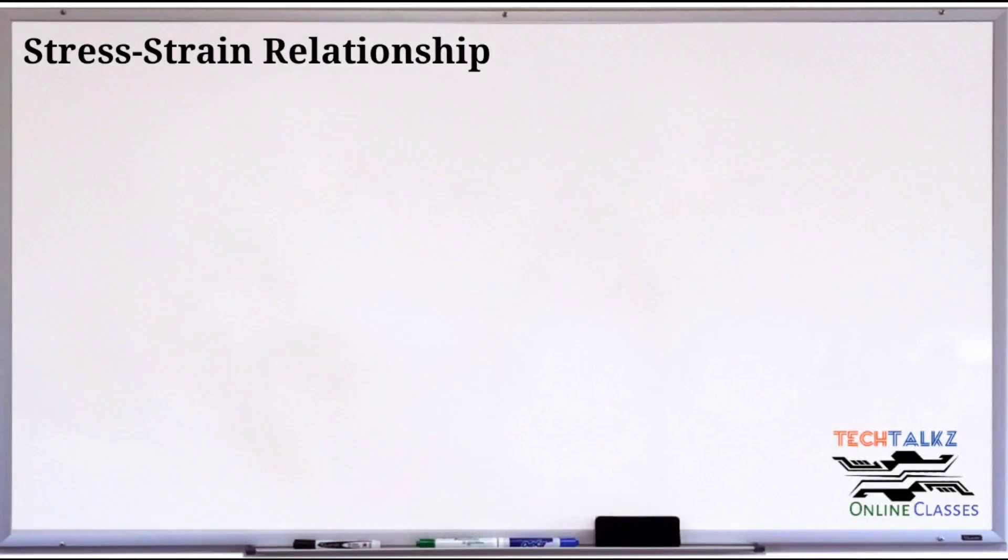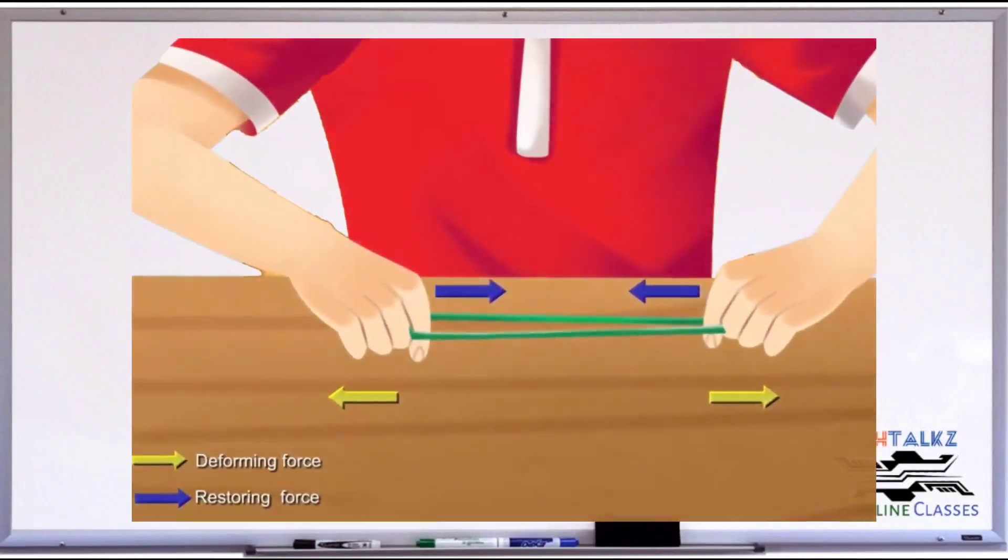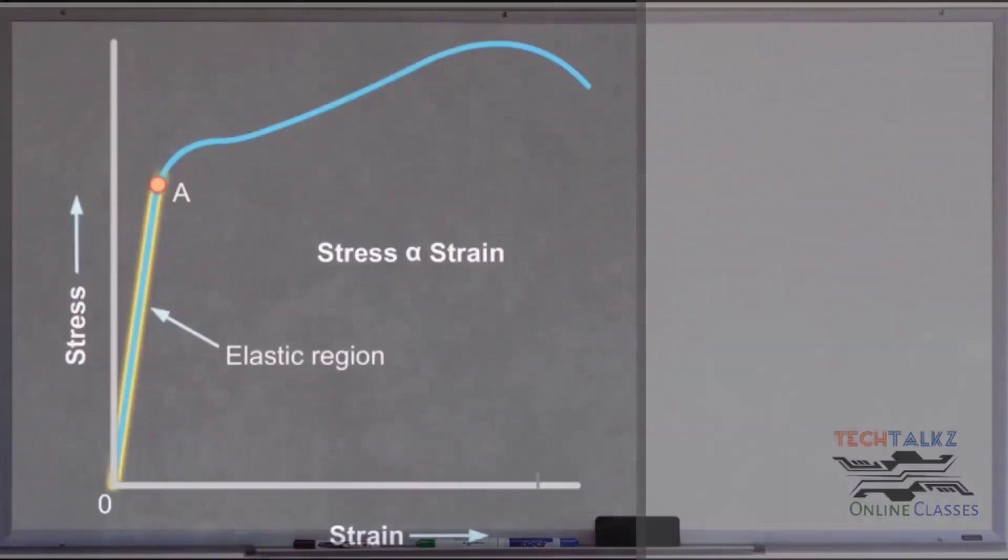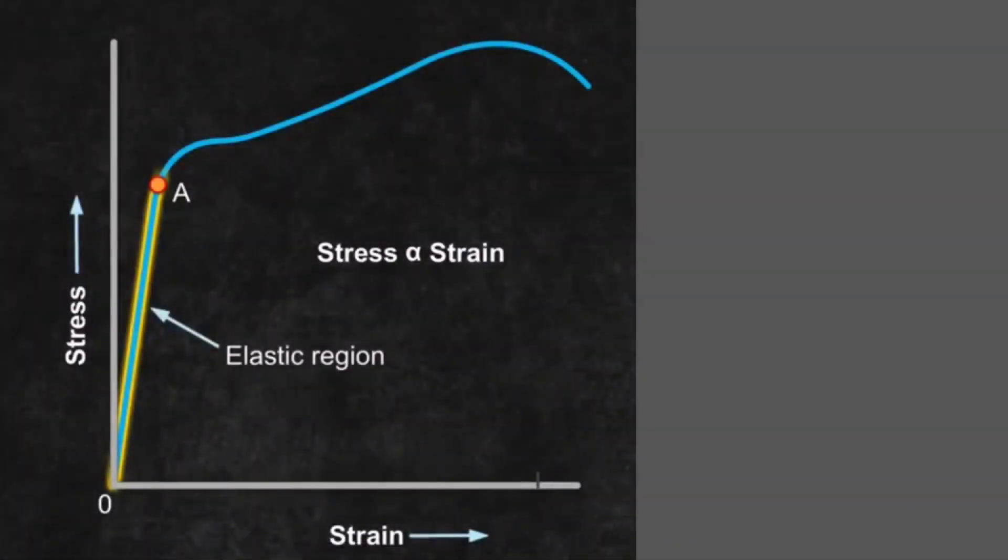When you apply a deforming force, an equal and opposite force is generated within the body called restoring force. This restoring force over area is stress, and deformation caused is strain. We can plot a graph between stress and strain. Check the figure.